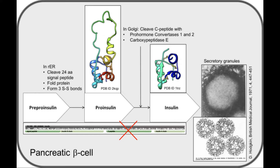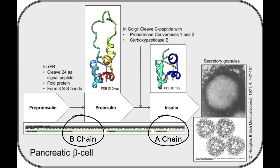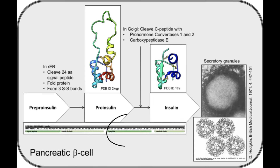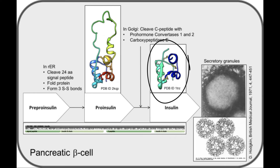Removing the C-peptide from the middle of the protein breaks insulin into two chains, chain B and chain A, but the covalent disulfide bonds hold them together. The amount of C-peptide is used to monitor how much insulin is being made in an individual. Following synthesis, the mature insulin molecules are stored as granules in specialized vesicles near the surface, ready to be released following a meal.